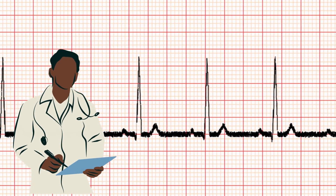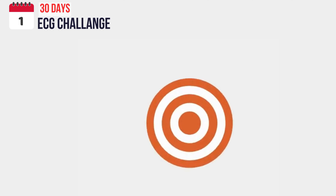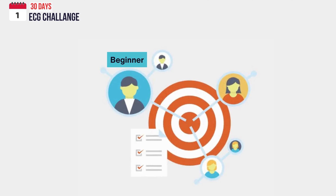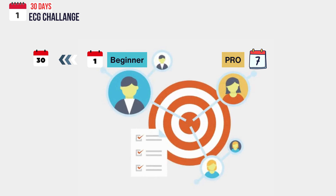Now let's divide our viewers into their respective expertise levels and assign them the appropriate challenges. For beginners, if you're new to ECG interpretation, your journey begins with day one and progresses through day 30 — each day providing foundational knowledge that gradually increases in complexity. For pros, if you consider yourself a seasoned expert, your challenge starts on day seven and extends all the way to day 30, testing more advanced concepts and cases to refine your skills.